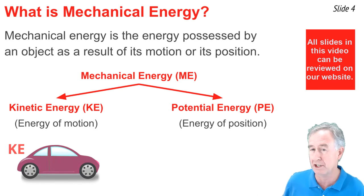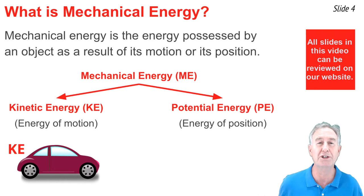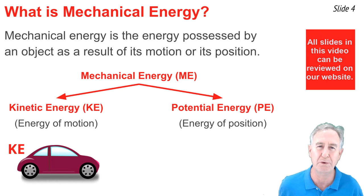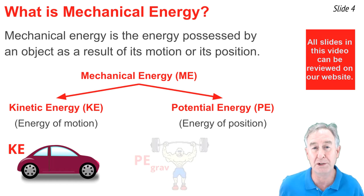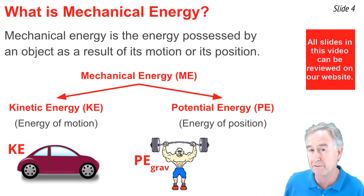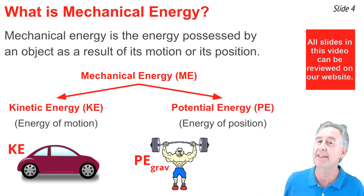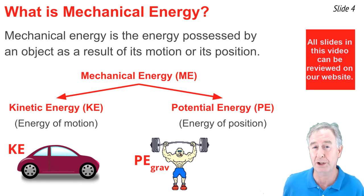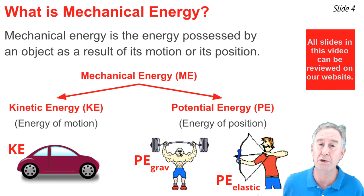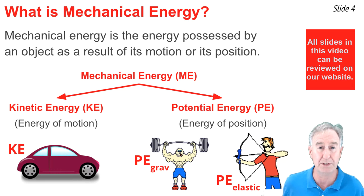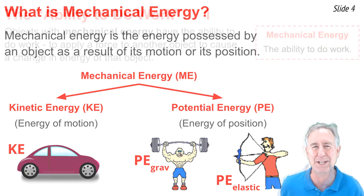As an example of kinetic energy, consider a moving car. Because it's moving, it has energy of motion, or kinetic energy — a form of mechanical energy. As an example of potential energy, consider a weightlifter lifting a barbell above his head. That barbell has gravitational potential energy, a form of mechanical energy. Or think of the bowstring being stretched on an archer's bow. This stretched bowstring possesses elastic potential energy, another form of mechanical energy.